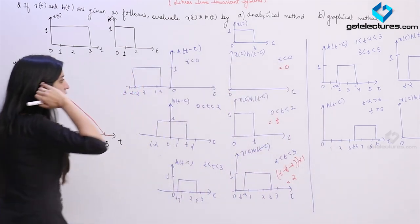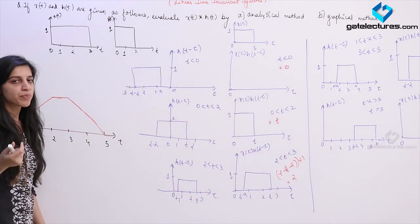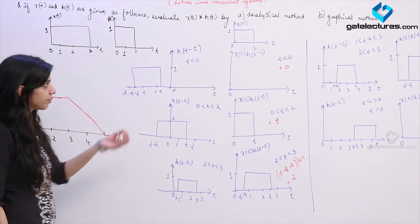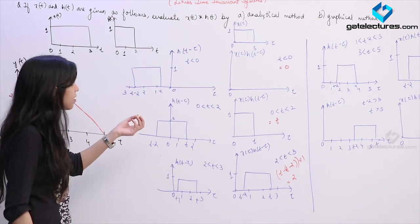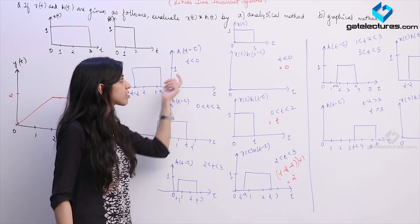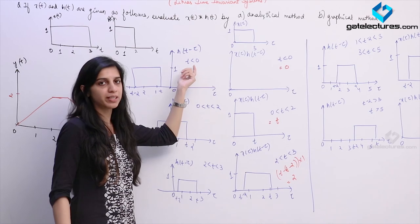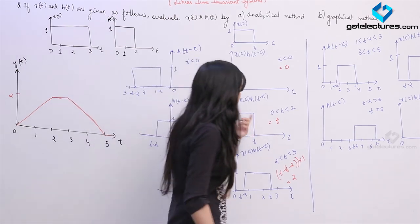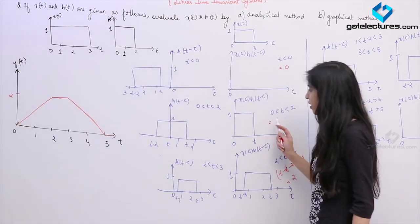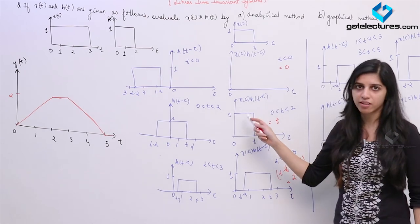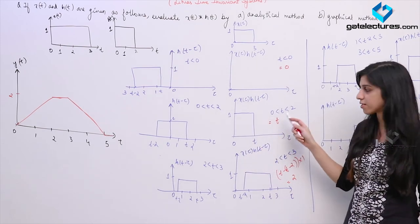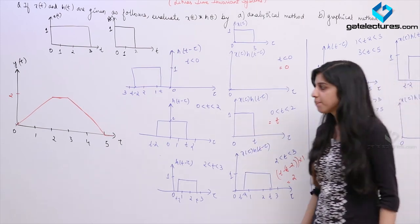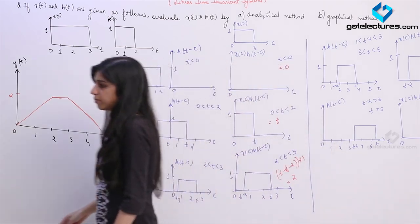So whichever method you find easier or whichever method you have been asked for, you can do it. In graphical method, you just keep on shifting this pulse according to different time intervals and then see the intersection. After you find the intersection, you need to find the area under the curve and then plot accordingly. This is going to be the final answer.